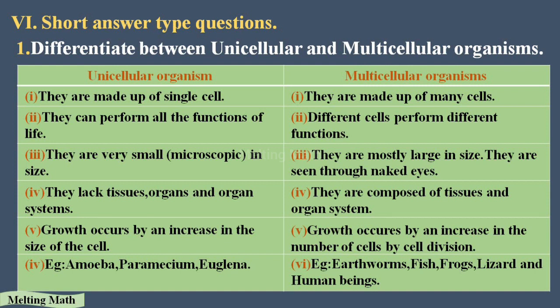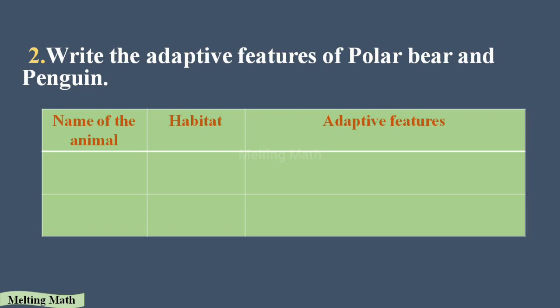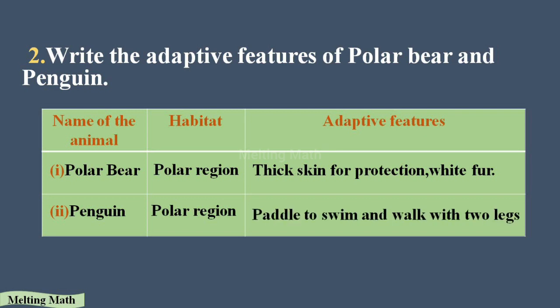These differences between unicellular and multicellular organisms were discussed in detail in the previous video. Question two: write the adaptive features of polar bear and penguin. The polar bear's habitat is the polar region; its adaptive features are thick skin for protection and white fur. The penguin's habitat is also the polar region; its adaptive features are paddles to swim and walking with two legs.